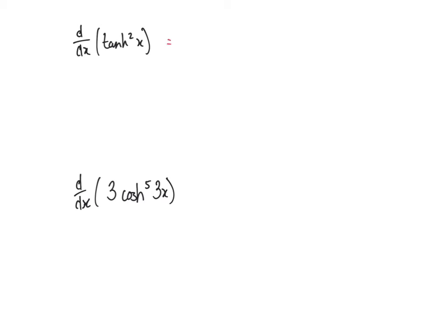So these examples work on similar principles. When we differentiate tanh squared x, we use the chain rule: we get two tanh x times the differential of tanh x. As we've already seen, when we differentiate tanh x we get sech squared x. So the result is two tanh x times sech squared x — we don't need to go through the rigmarole of differentiating tanh again.